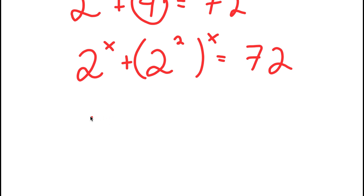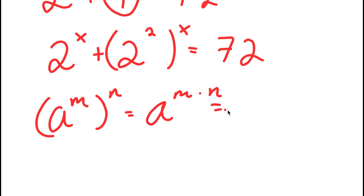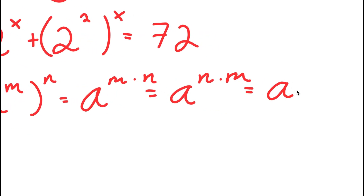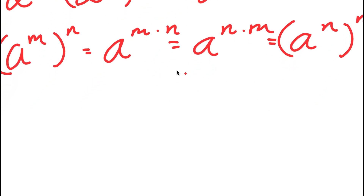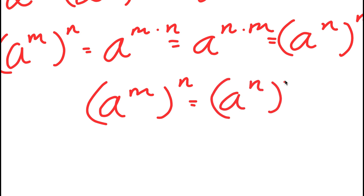If I have something in the form a to the power of m to the power of n, this is the same thing as a to the power of m times n. However, a to the power of m times n is also the same thing as a to the power of n times m. So if a to the power of m times n equals a to the power of m to the power of n, then a to the power of n times m should equal a to the power of n to the power of m. In simpler terms, a to the power of m to the power of n is equal to a to the power of n to the power of m.